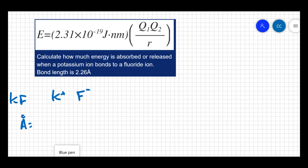An angstrom is equal to 10 to the negative 10 meters. Or another way to say this is that an angstrom is one tenth of a nanometer, or there are 10 angstroms for every one nanometer. That means a bond length of 2.26 angstroms will give us a distance of 0.226 nanometers in my equation.